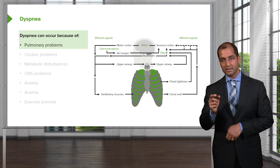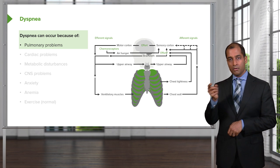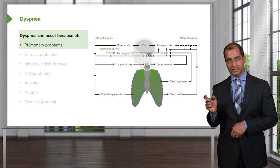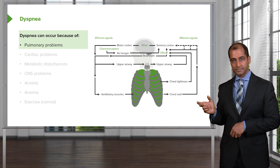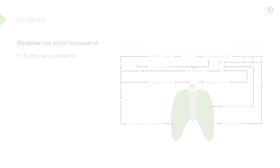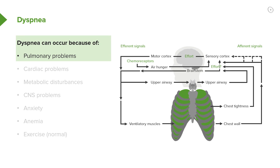Once that occurs, it's going to trigger through the motor cortex. Come over to your left now. In the motor cortex, see where it says chemoreceptors — it's hungry for air because now it's sensed an increased amount of carbon dioxide. Maybe there's dyspnea; you're holding on to carbon dioxide. What is that called? Hypercapnia or hypercarbia. What's your level? Greater than 40.